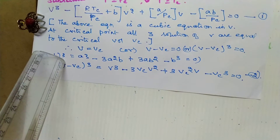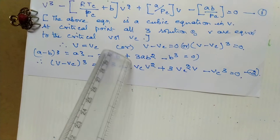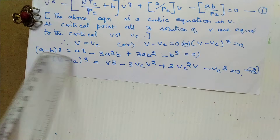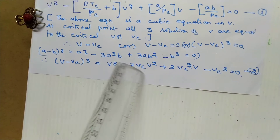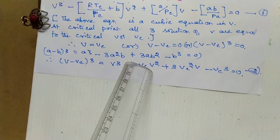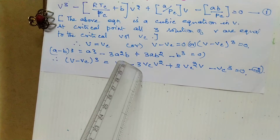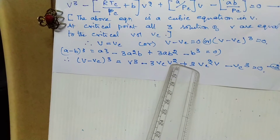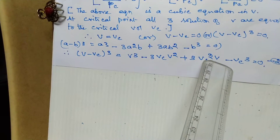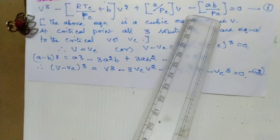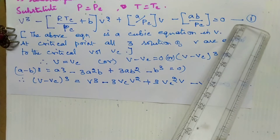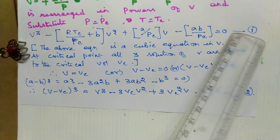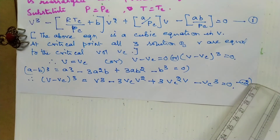So V minus Vc cubed is equal to 0. Expanding: V minus Vc whole cube equals V cubed minus 3Vc squared times V plus 3Vc times V squared minus Vc cubed equals 0. So V minus Vc cubed equals V cubed minus 3Vc squared, giving us V minus Vc cubed equals 0.